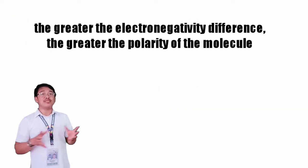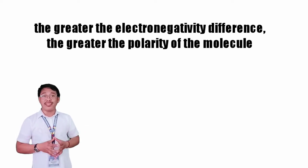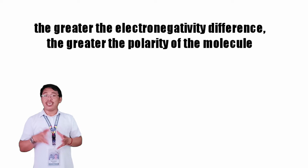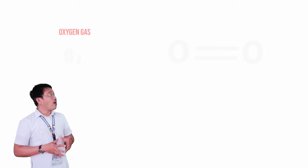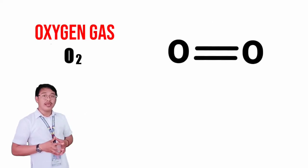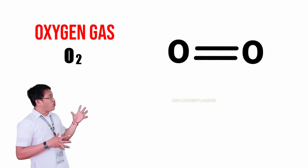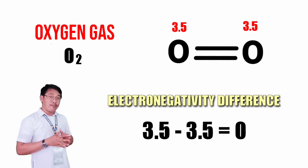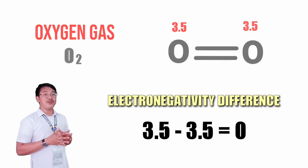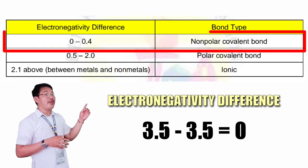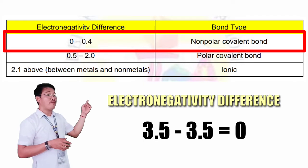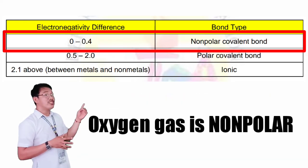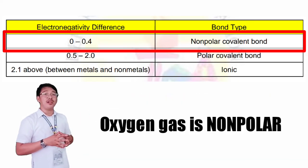The greater the difference between the electronegativity of the atoms involved in the bond, the greater is the polarity of the molecule. For the oxygen gas O2, the electronegativity value of oxygen is 3.5. Therefore, 3.5 minus 3.5 is 0. So this is within the bond range of 0 to 0.4, which means that oxygen is a non-polar covalent.